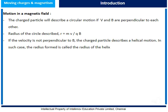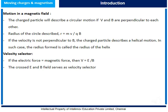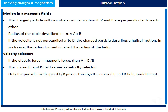Let us understand the velocity selector. If the electric force is equal to the magnetic force, then the velocity is equal to E divided by B. The crossed E and B fields serve as a velocity selector. Only particles with speed E/B pass through the crossed E and B fields undeflected.